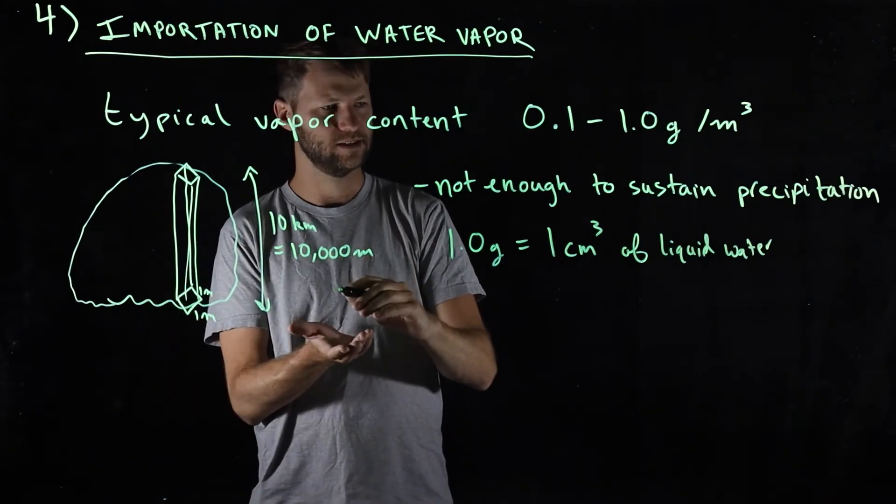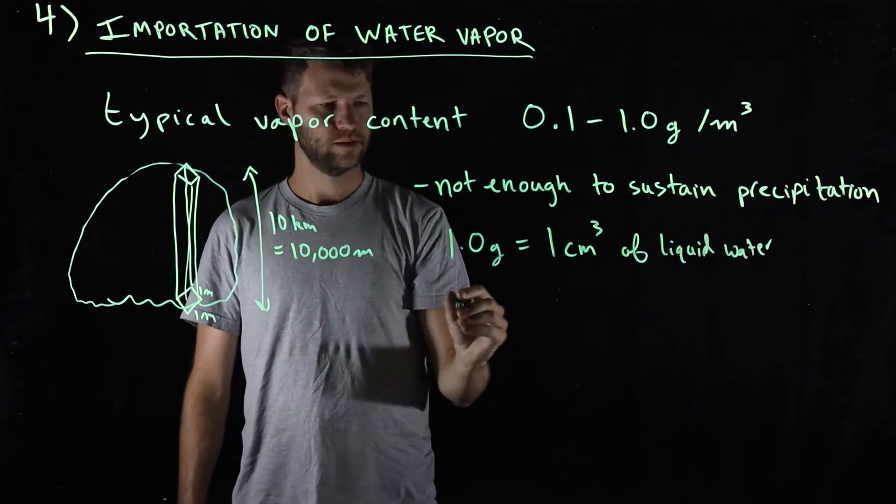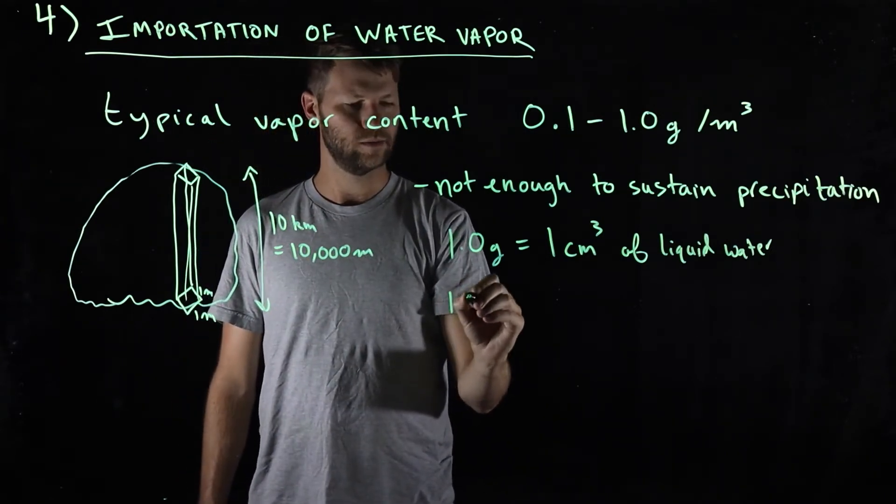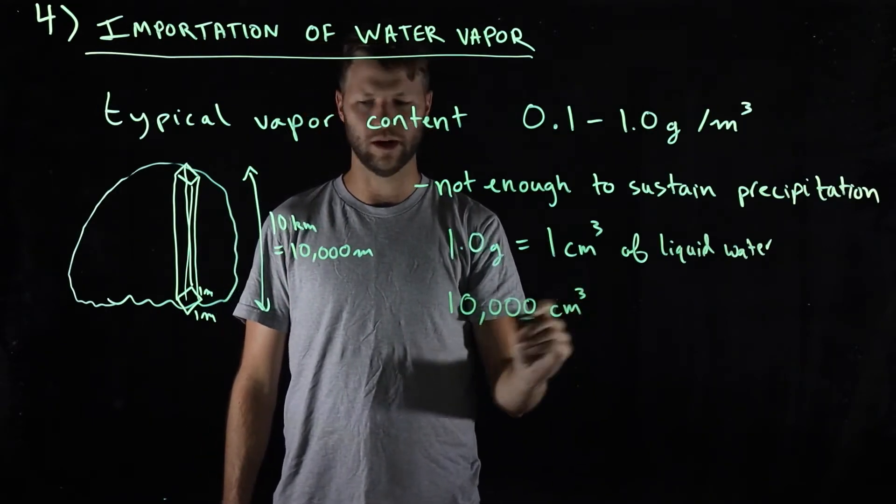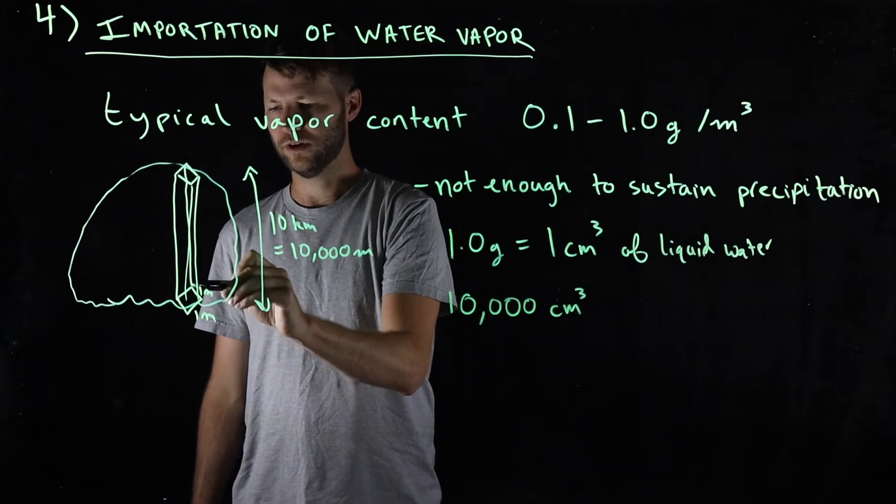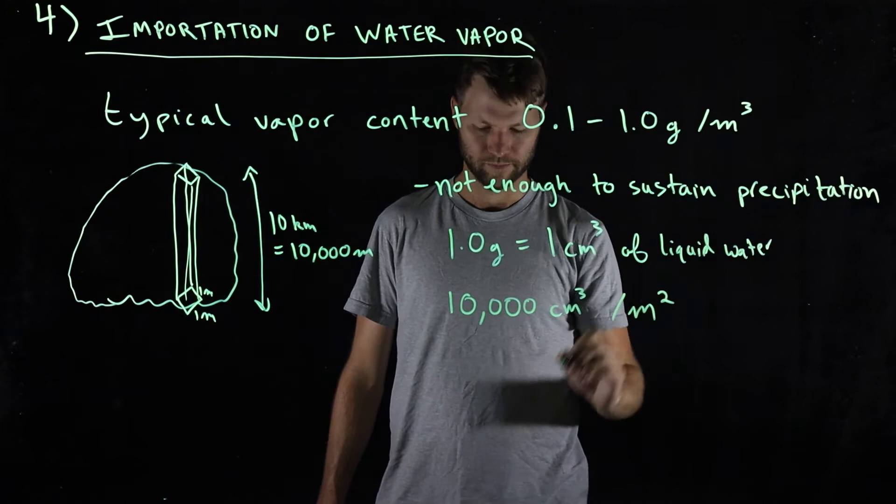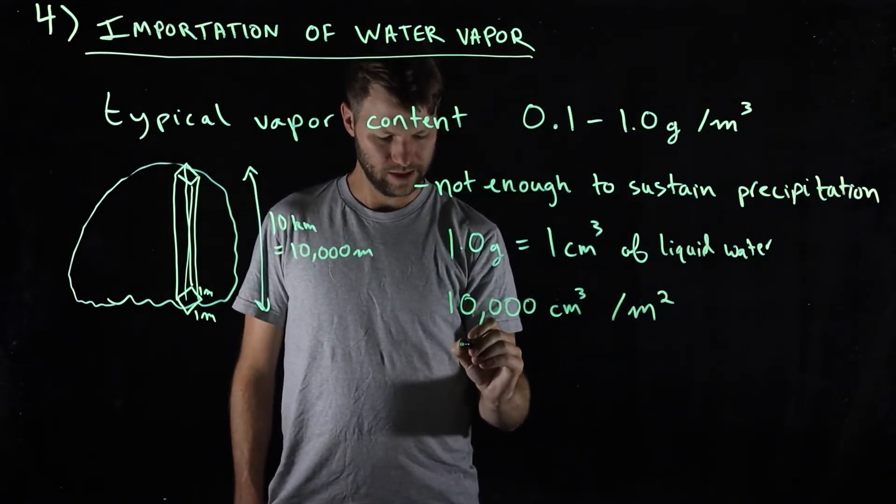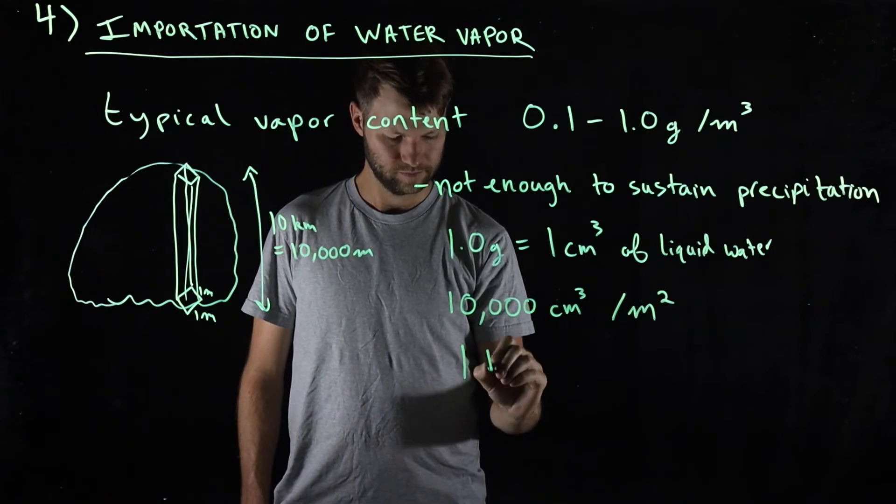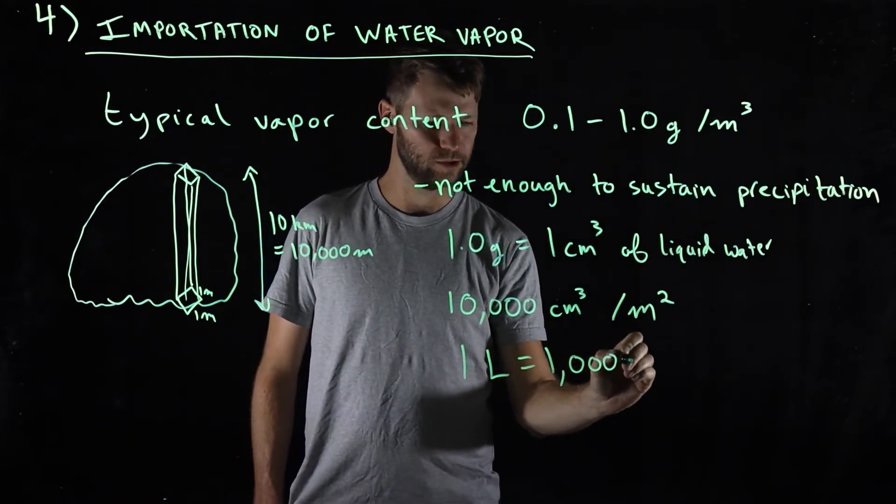So if we were to multiply this, or think about 1 cubic meter times 10,000 meters, we would get 10,000 cubic centimeters of water per square meter. And just remember that 1 liter is equal to 1,000 cubic centimeters.